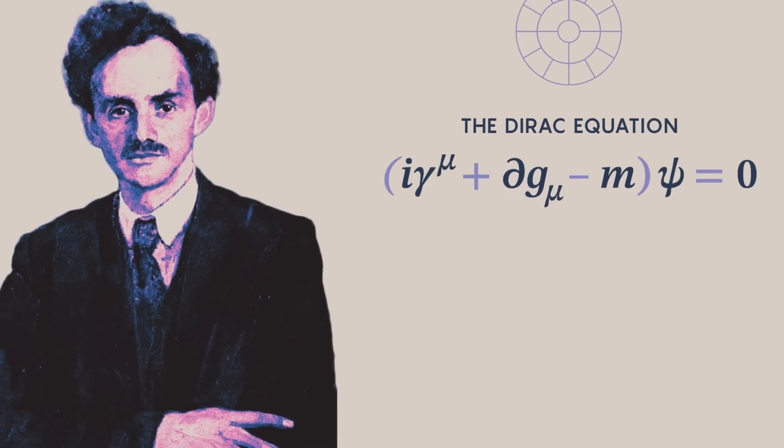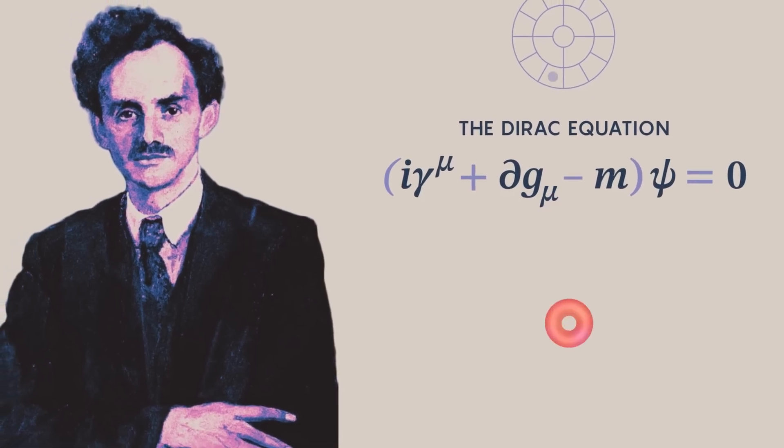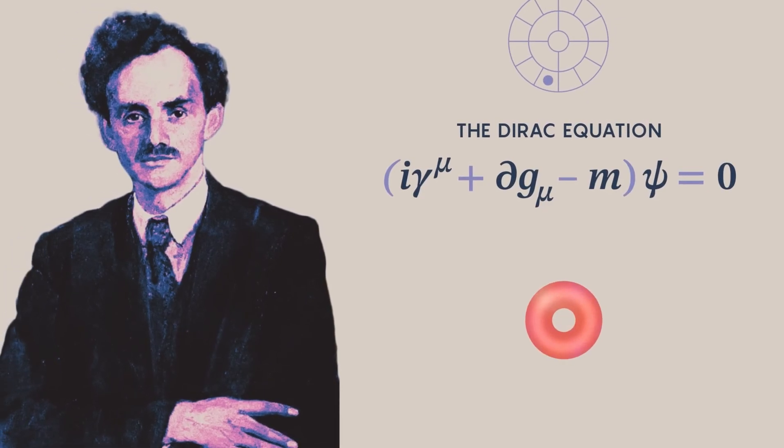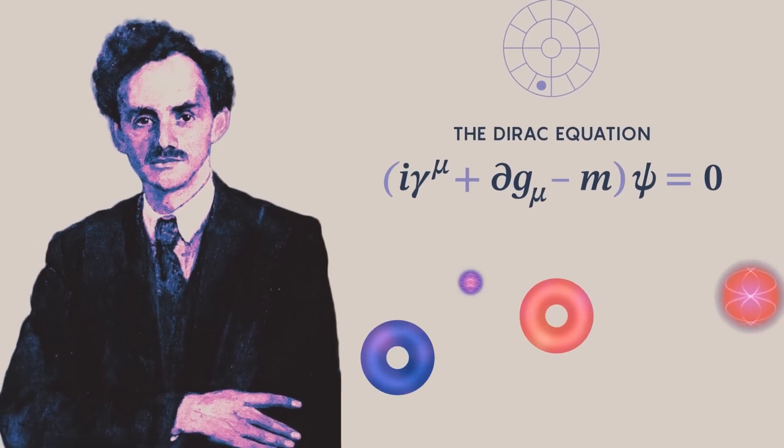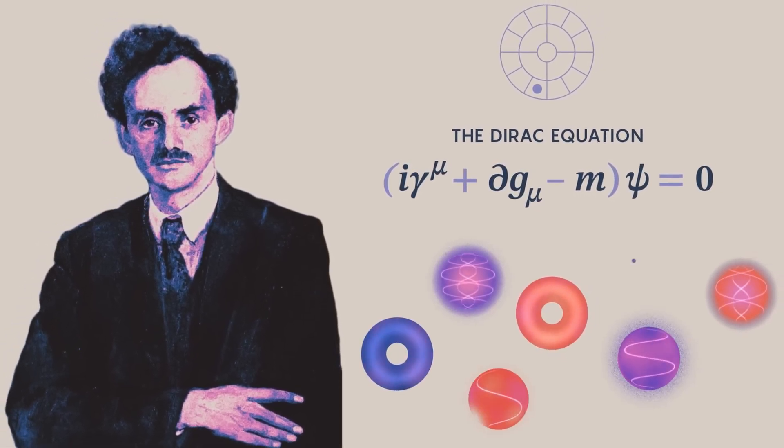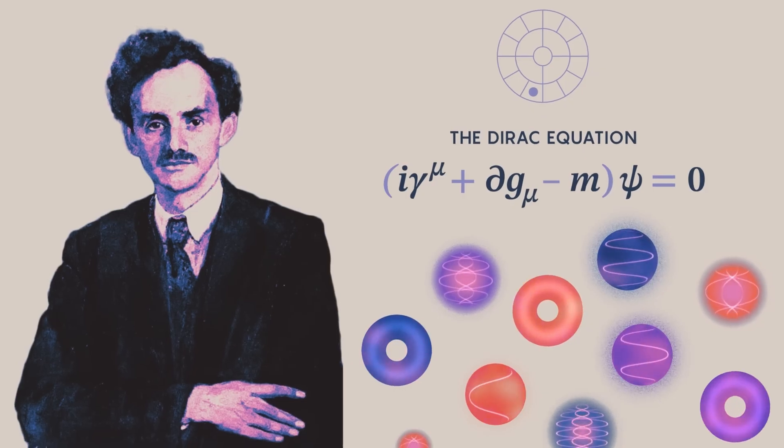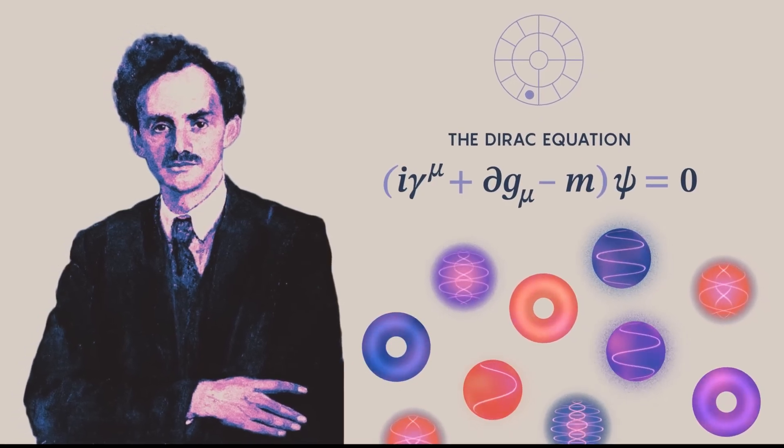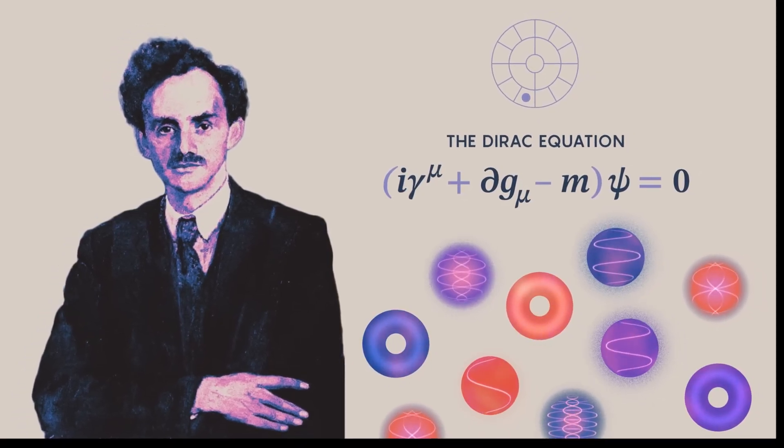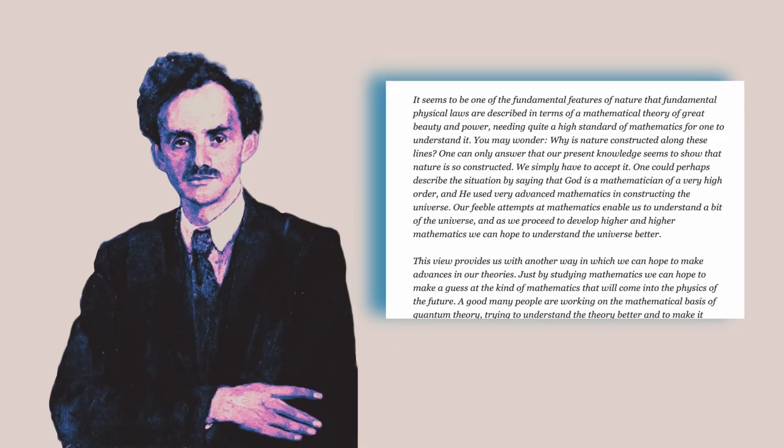Paul Dirac is considered to be the most important physicist after Newton. He discovers the famous Dirac equation and wins the Nobel Prize. He writes the formula he found for electrons. But in the following years, every new discovery to my amazement, the particle fits this equation. He sees and says,